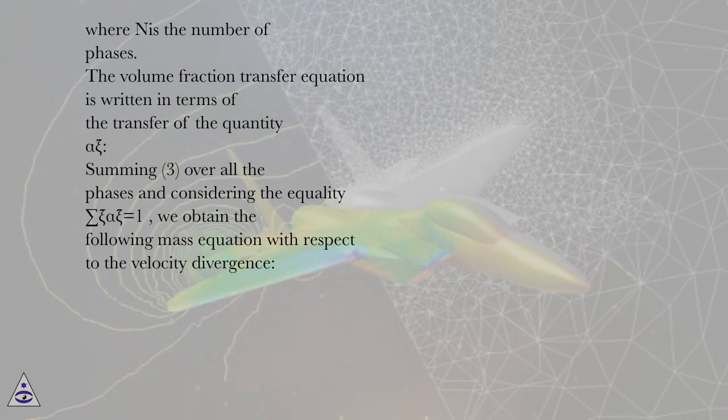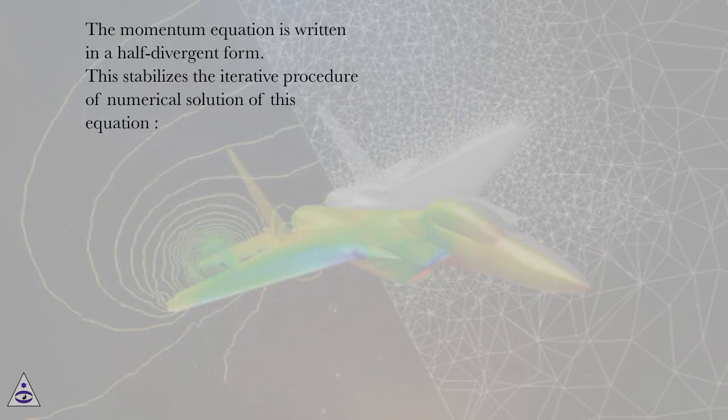The volume fraction transfer equation is written in terms of the transfer of the quantity alpha_zi. Summing over all the phases and considering the equality sum of alpha_zi equals 1, we obtain the following mass equation with respect to the velocity divergence. The momentum equation is written in a half-divergent form.